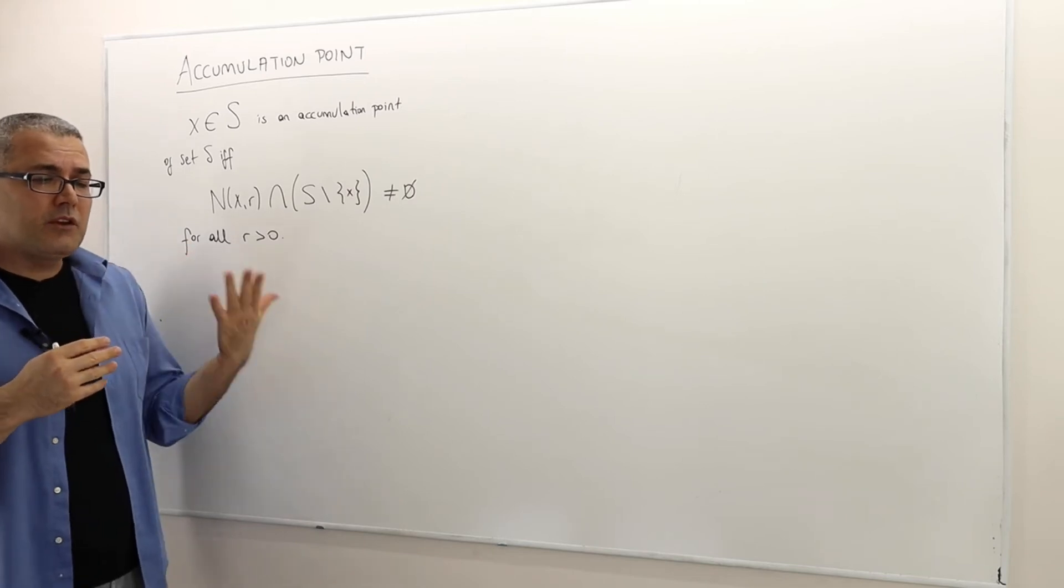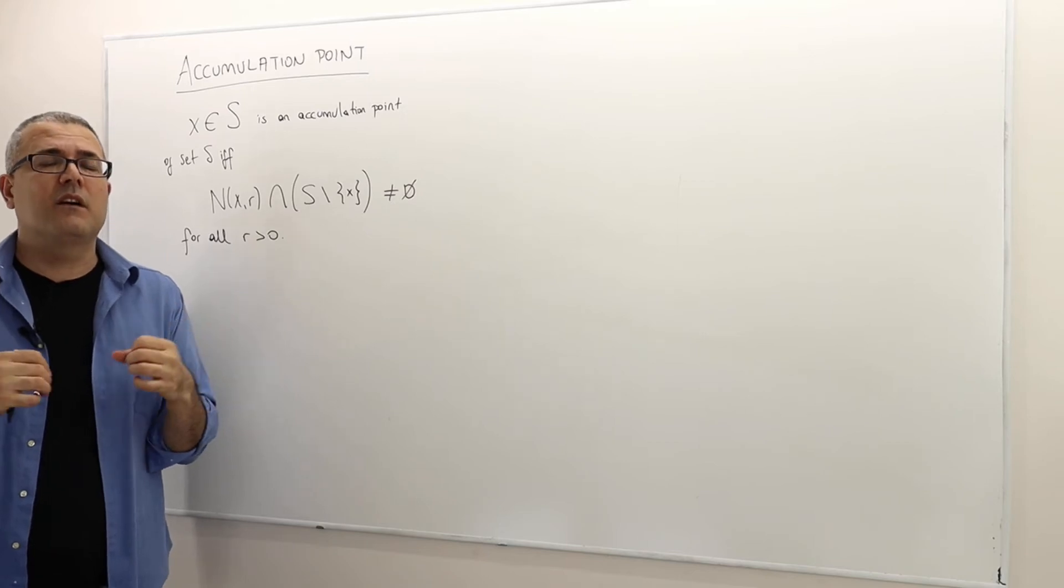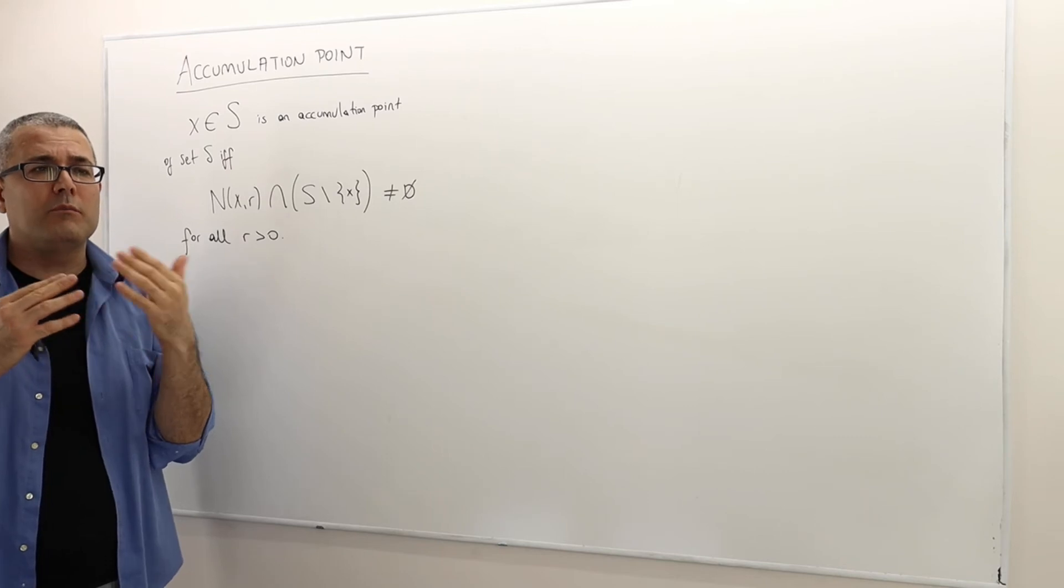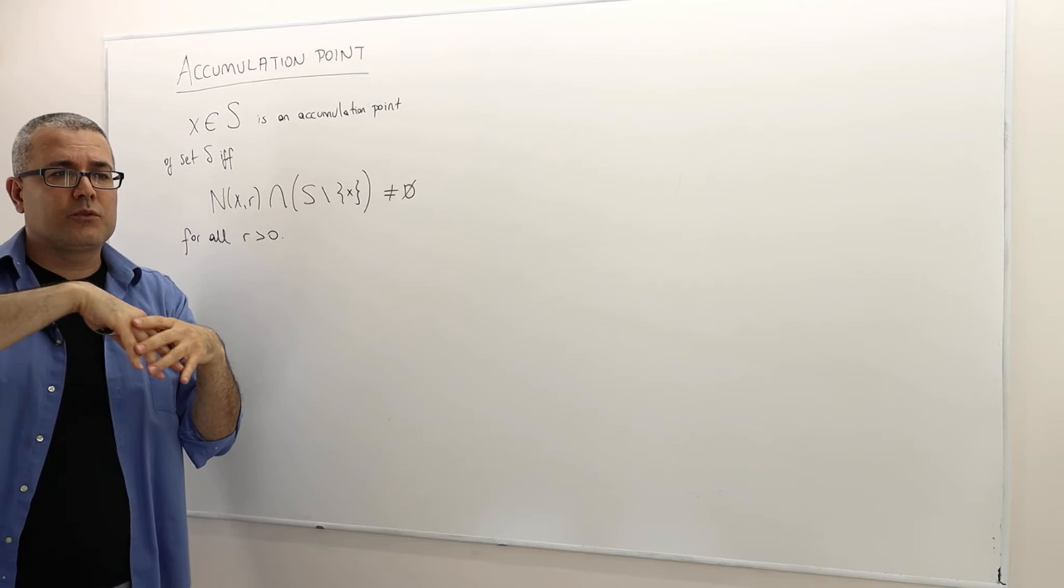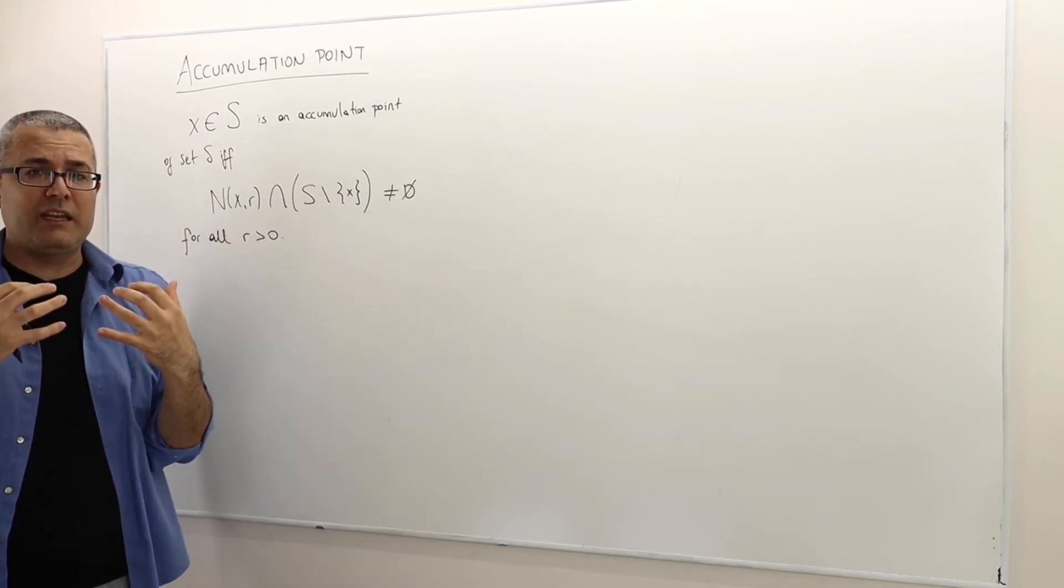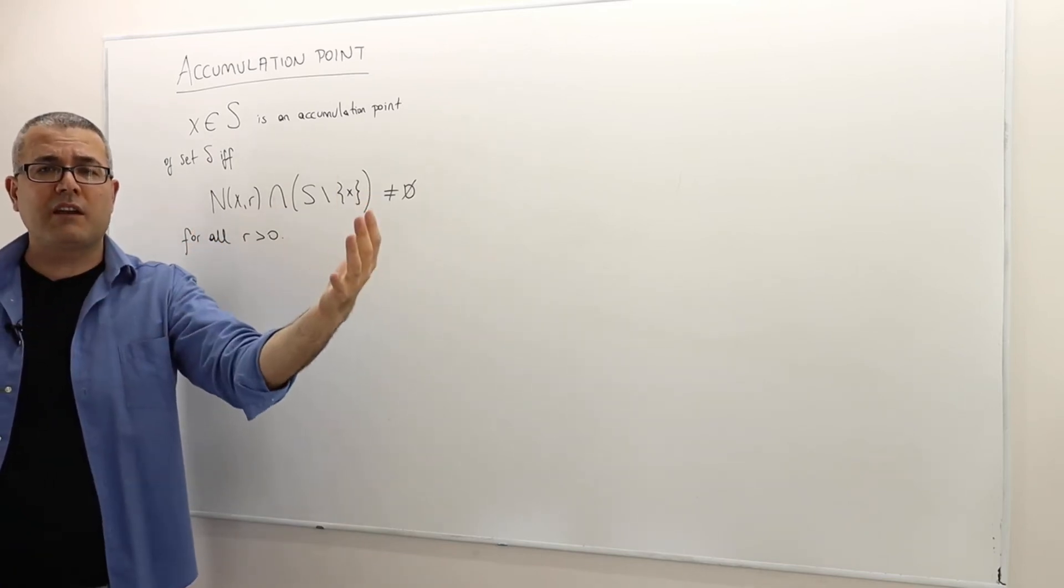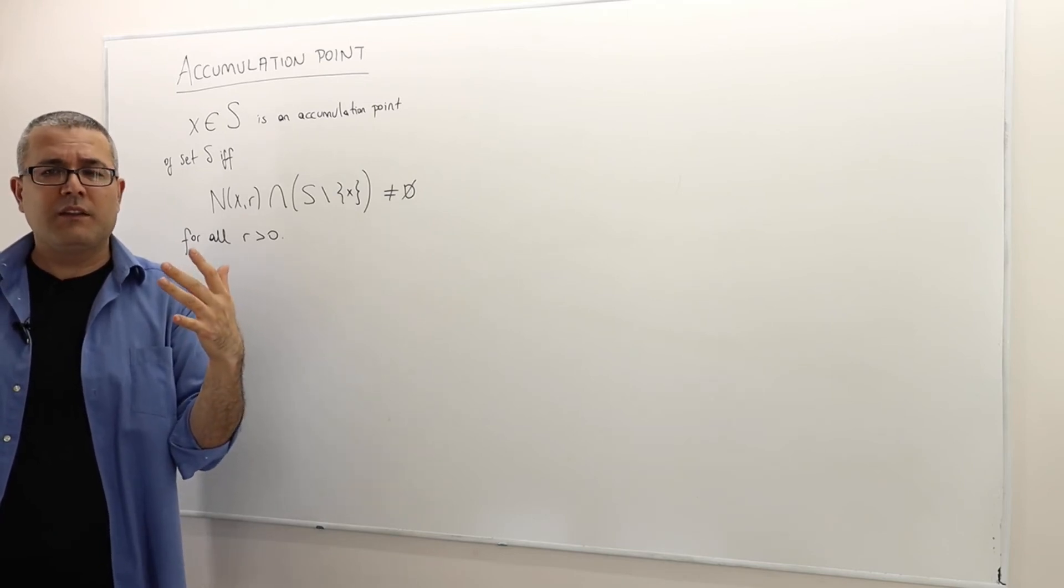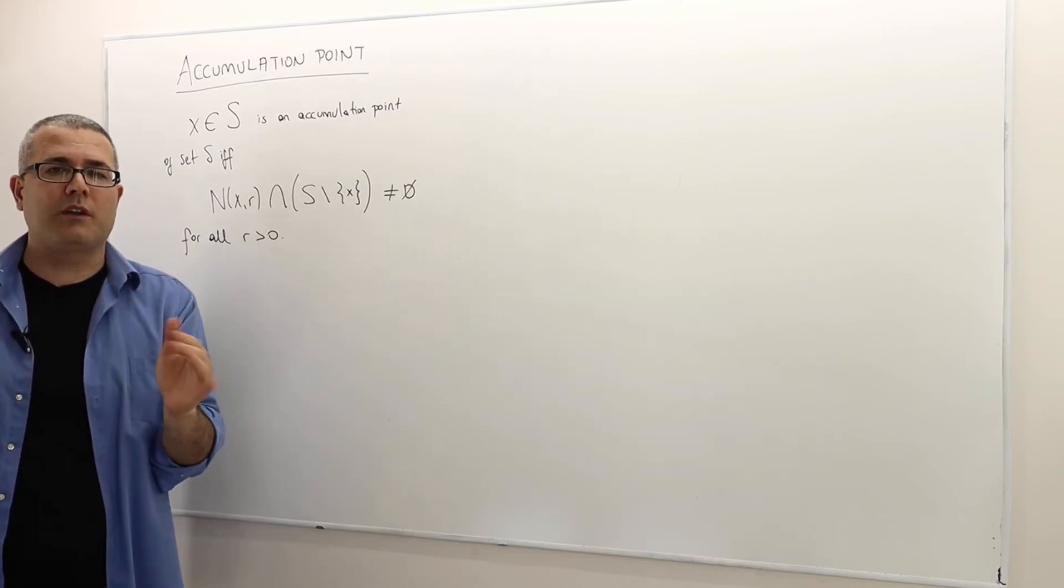Intuitively, an accumulation point is a point where you cannot isolate it. An accumulation point means you cannot draw a boundary or a neighborhood around it and isolate it and say, okay, now X is isolated from all the other elements from the set S. You cannot isolate accumulation points.